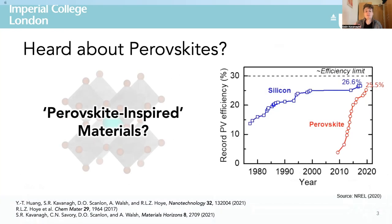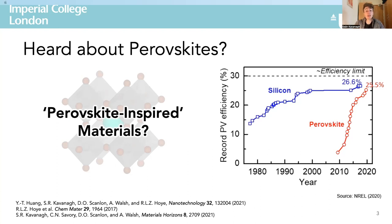Given the many advantages of perovskites, but also the well-known stability and toxicity concerns, researchers have looked to understand the key performance properties of perovskites to then try and identify alternative materials with similar properties and hopefully similar performance, while avoiding the presence of lead and achieving a good level of operational stability. In particular, the rapid improvement in efficiency of perovskites in such a short time span gives us hope that we can adopt a materials-by-design approach to identify these so-called perovskite-inspired materials.